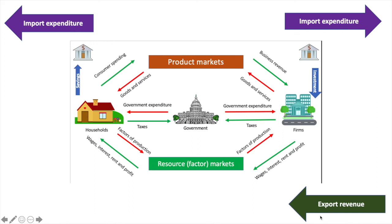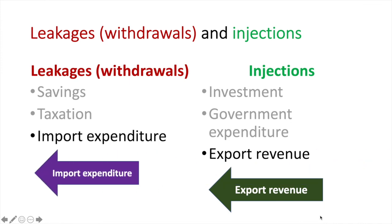When the French consumer purchased jeans from an American company, this is a leakage from the French economy and an injection into the American economy. That completes our list of leakages and injections. In this final four-sector open model, we have all three leakages: savings, taxation, and import expenditure. We also have all three injections: investment, government expenditure, and export revenue.